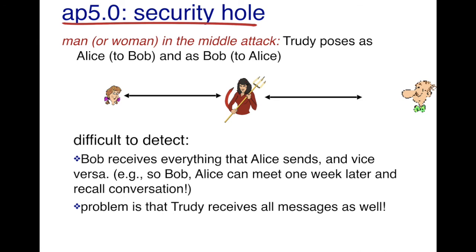This kind of attack is very difficult to detect because Bob receives everything that Alice sends and vice versa. Even if Alice and Bob meet in person later, they can recall the entire conversation and believe they had an authentic exchange with nobody intercepting their messages. We'll stop here and in a future video we'll talk about digital signatures and see how digital signature certificates can be used to prevent this kind of attack.